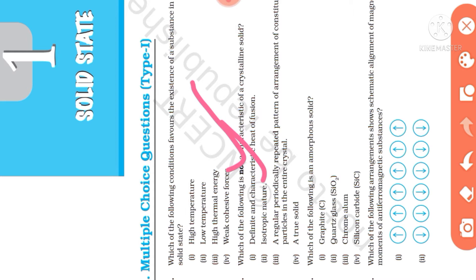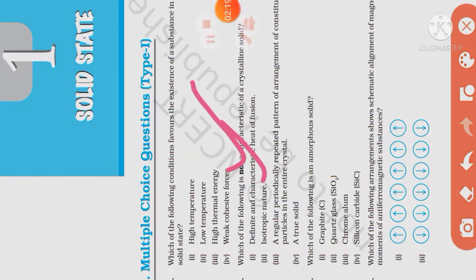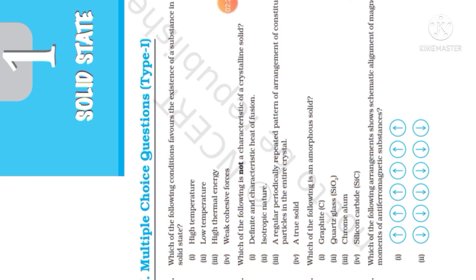Crystalline solids are anisotropic in nature, not isotropic. This is because inside a crystalline solid there is a 3D arrangement of particles, and different planes give different properties. So anisotropic is the property of crystalline solids, meaning properties differ in different directions.